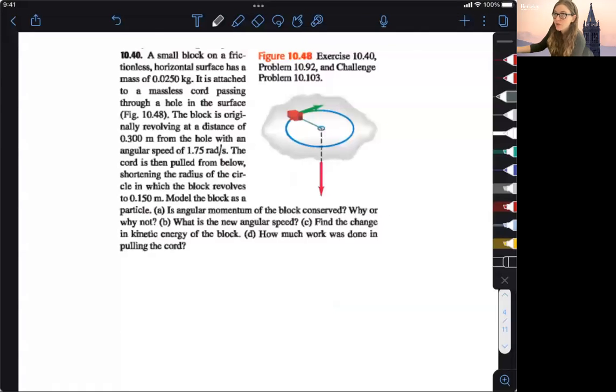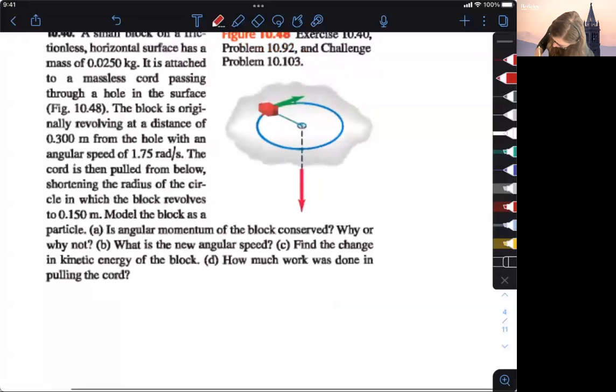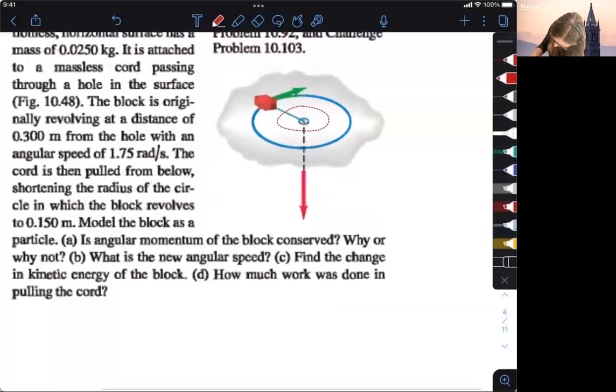Okay, so this problem is also another conservation of angular momentum problem. We have a block that is spinning around this circle here, and it's pulled in to a new radius, and it begins to spin with a new smaller radius, basically.